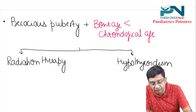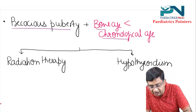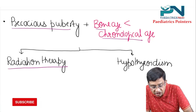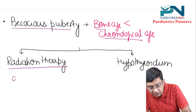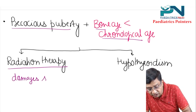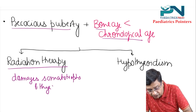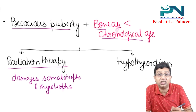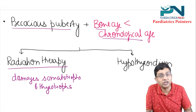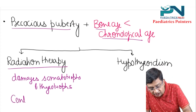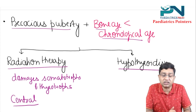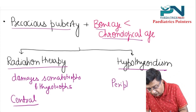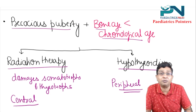Another cause of precocious puberty with bone age less than chronological age is radiation therapy. Radiation stimulates the GnRH pulse generator but damages somatotrophs and thyrotrophs. Because somatotrophs and thyrotrophs are damaged, bone age is less than chronological age, but precocious puberty occurs due to stimulation of the HPG axis — this is central precocious puberty.